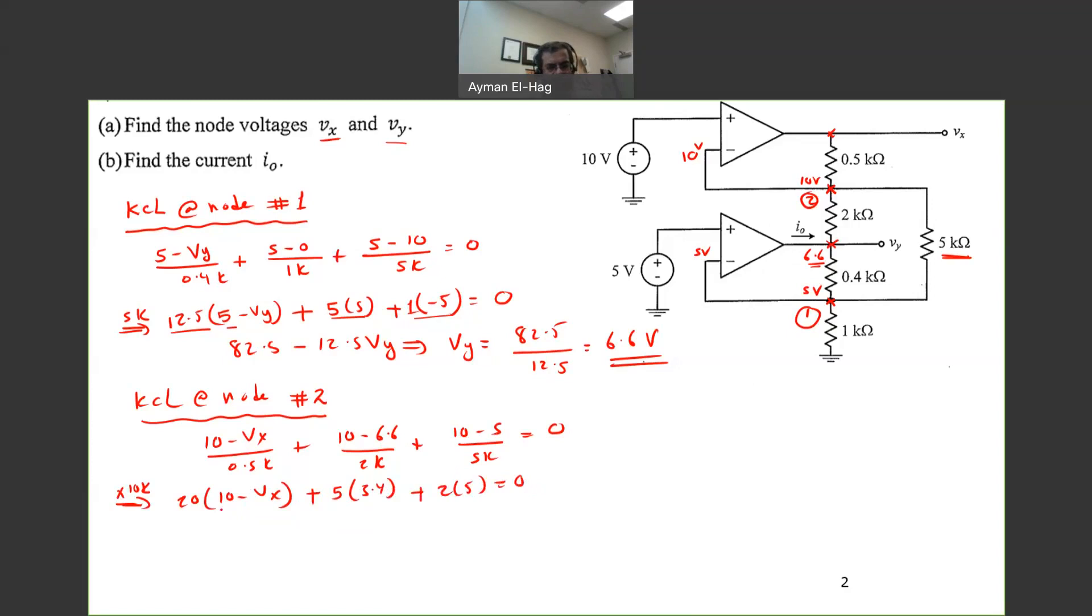So I will multiply the whole equations times 10K. So we will have here 20 times 10 minus Vx plus 5 times 10 minus 6.6, which is 3.4, plus this will be 2 times 10 minus 5, which is 5, equal to 0. So we will have 200 plus 5 times 3.4, plus 10, all of this will give us 227 minus 20 Vx, equal to 0. And from this, your Vx will equal to 11.35 volt. So I know this voltage now, 11.35 volt.